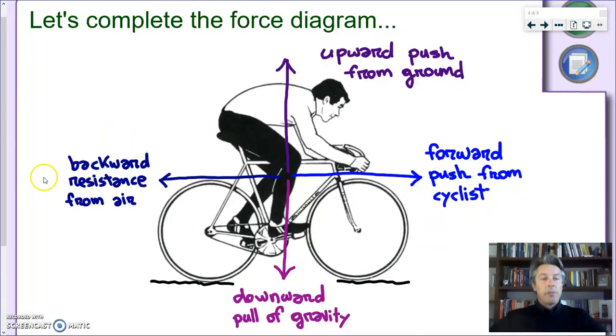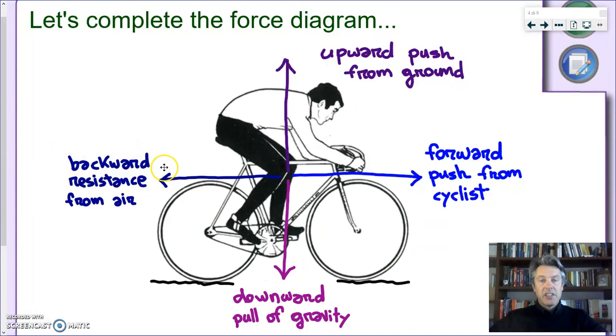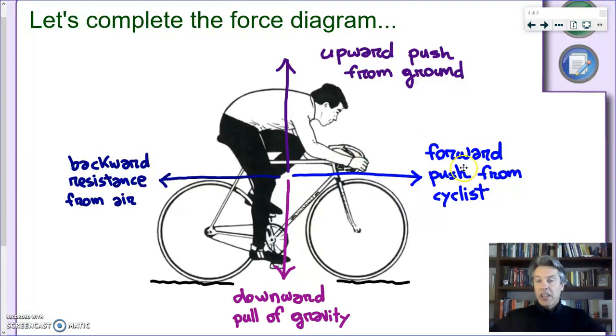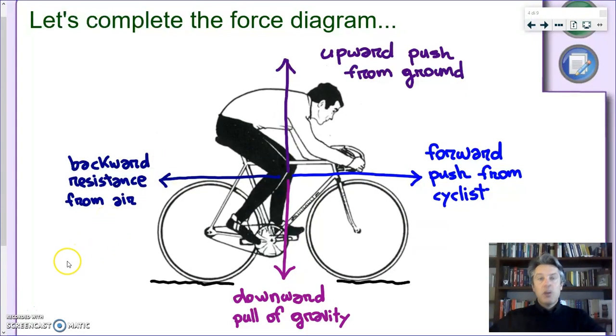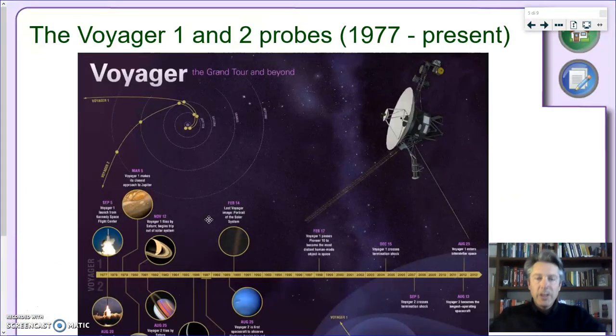But again, guys, the point is really air resistance. Because if you take this away, you only have this force which is eventually making you go slower and slower. To really understand that Newton was right and not Aristotle, we have again to go where we have no air resistance, where we have no opposing force. And no better example than space probes.